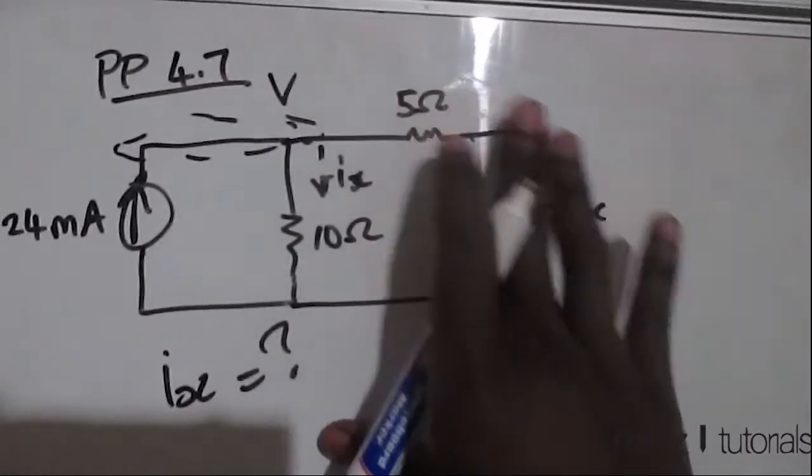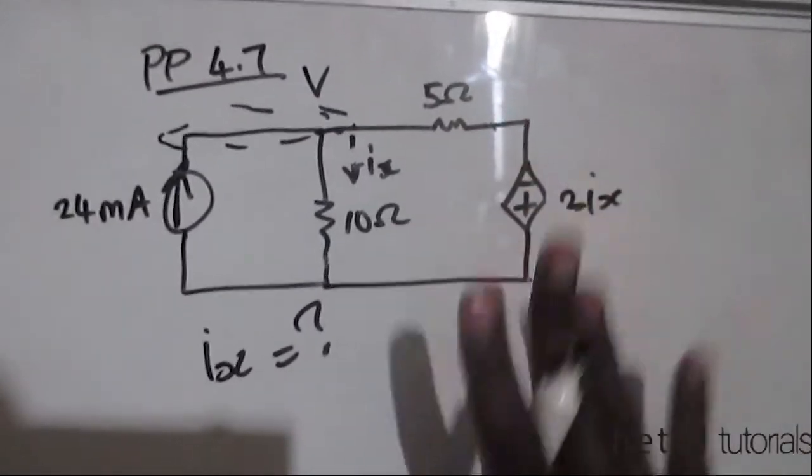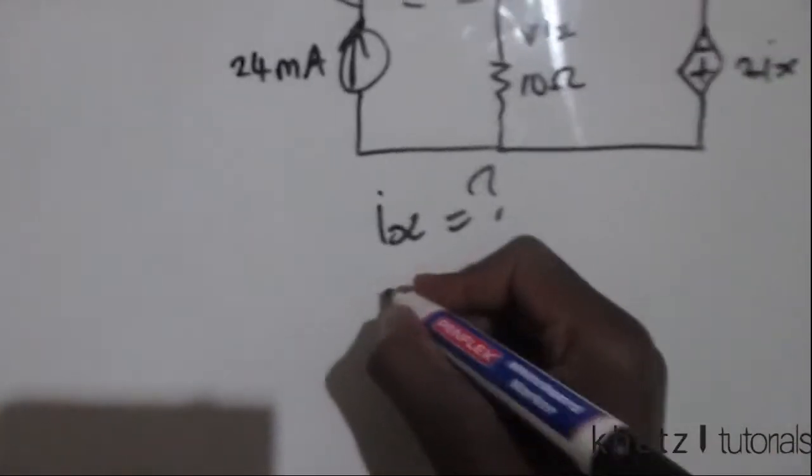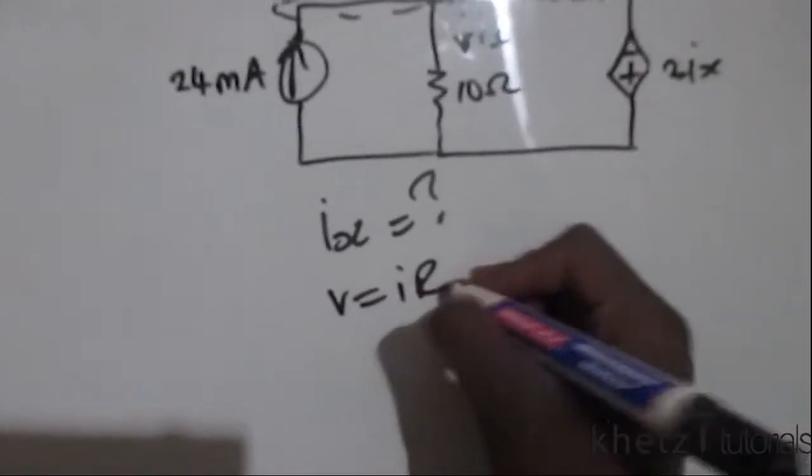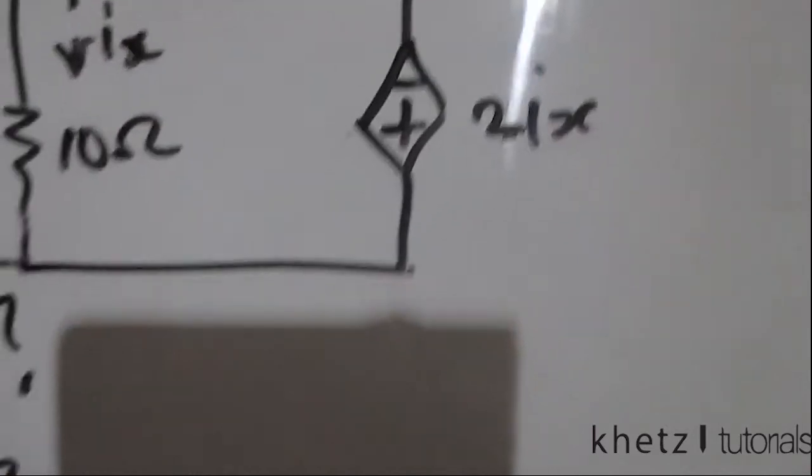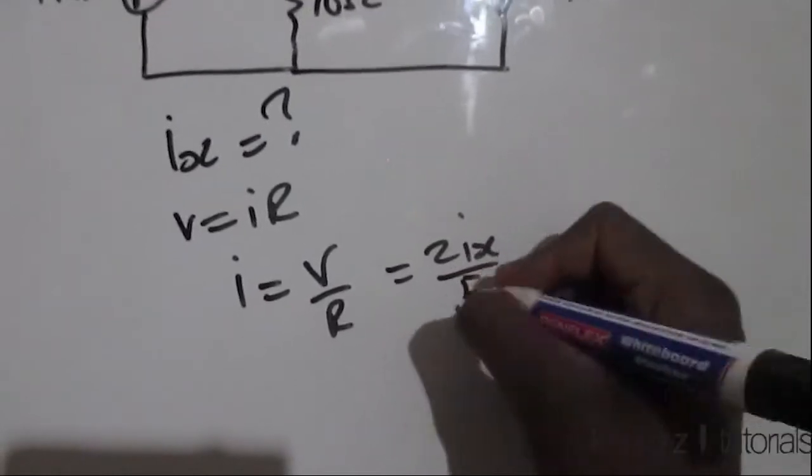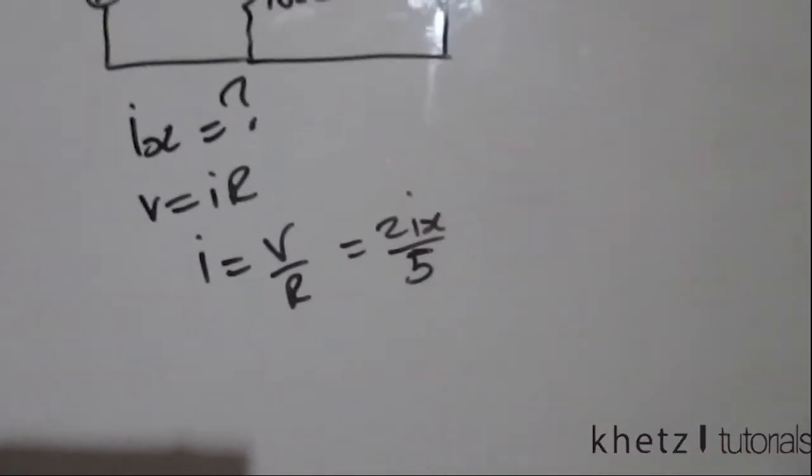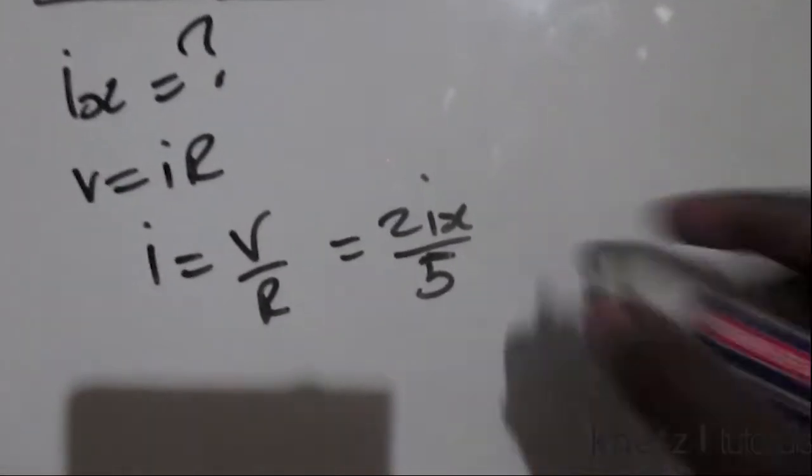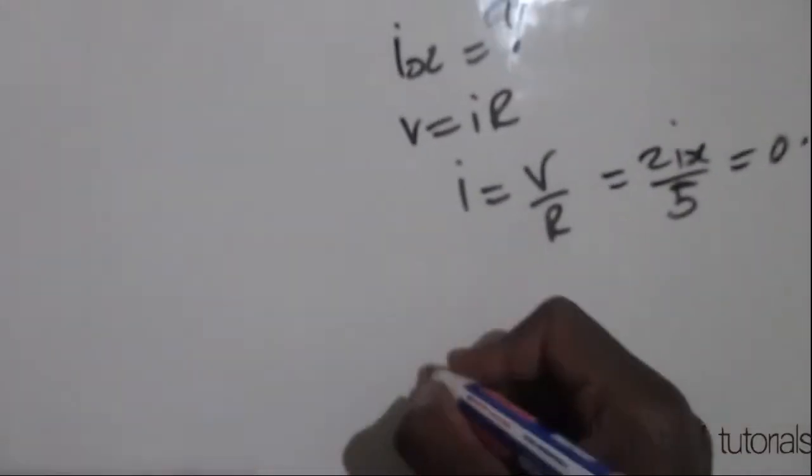Let's transform this other part. Since we have a voltage source in series with a resistor, let's transform that into a resistor which is in parallel with the current source. We're using Ohm's law, so basically we're just going to divide this voltage value of 2ix by the current value. That is the value of our current source which is 0.4ix.